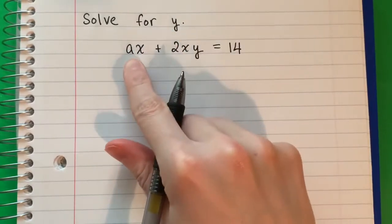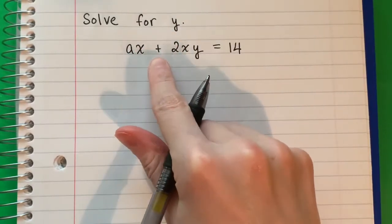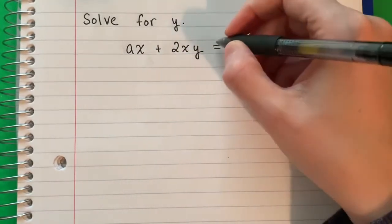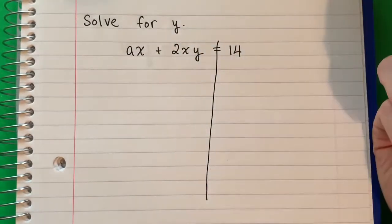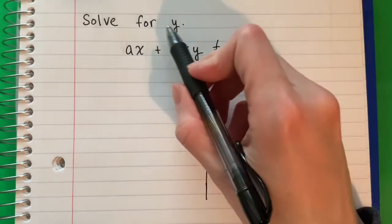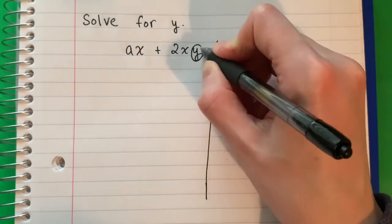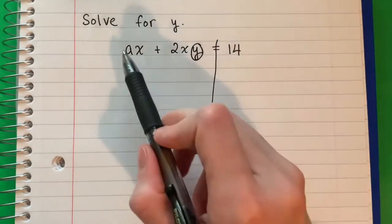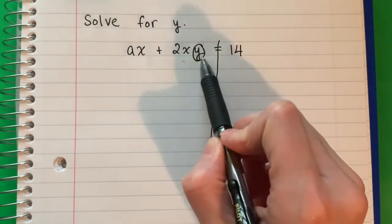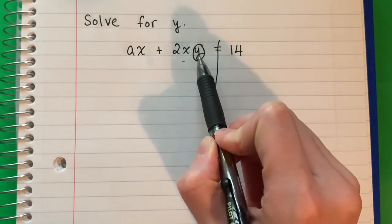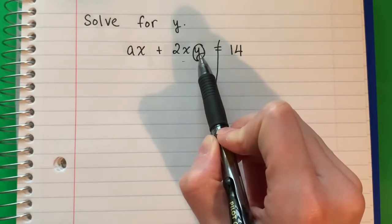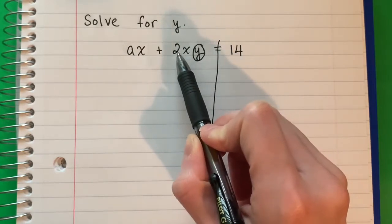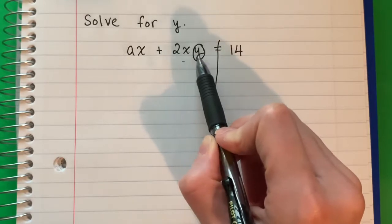Solve for y in the equation 8x plus 2xy equals 14. The first thing I'm going to do is draw my line on the equal sign. Solve for y means I want the y alone. There are two big parts right here: I have 8x and I have 2xy. I want the y alone, so I don't want to move the y. I don't want to move the 2 and the x because if I move those, I move the y.